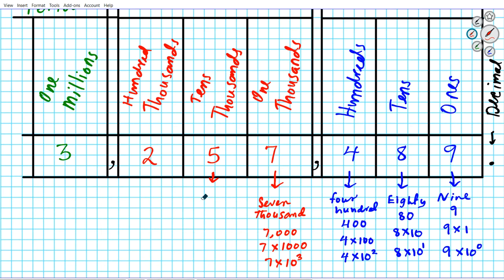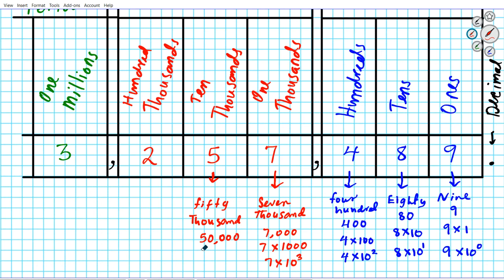Five in the ten thousands place is going to be fifty thousand. When we write it in numerical form it's fifty thousand. In expanded form it's five times ten thousand — remember we're in the ten thousands place. Using exponents, since we have four zeros, it's five times ten to the fourth power.